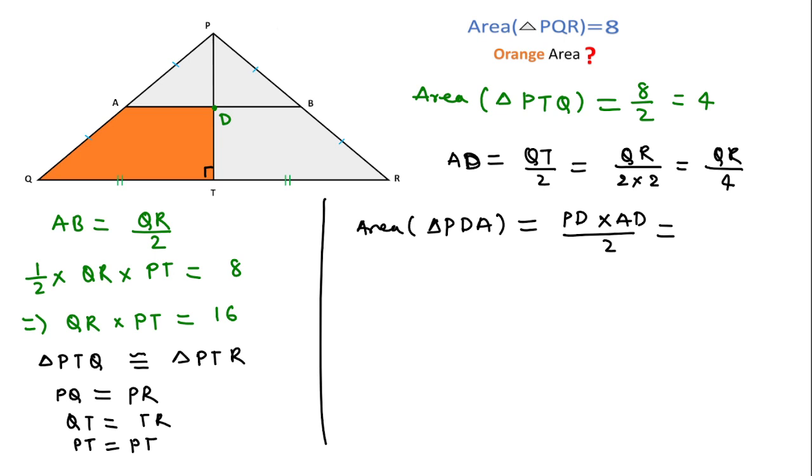In place of PD we can write PT over 2, because D is the midpoint, and in place of AD we can write QR over 4, and over 2, that is PT into QR over 16 we can write. And we have already calculated...